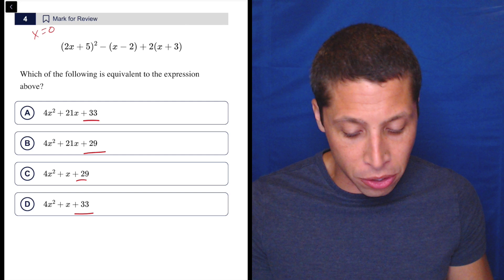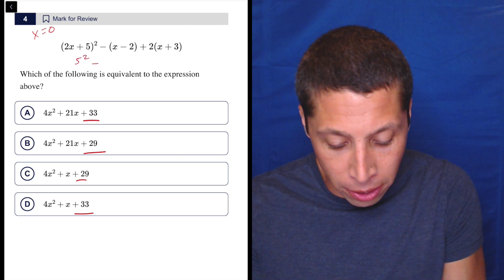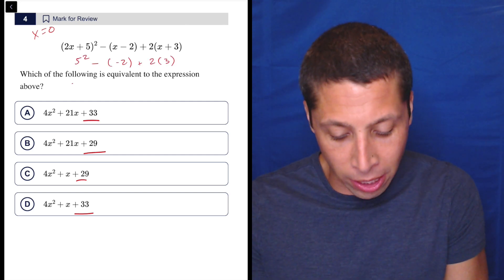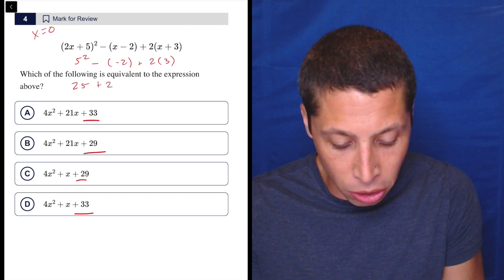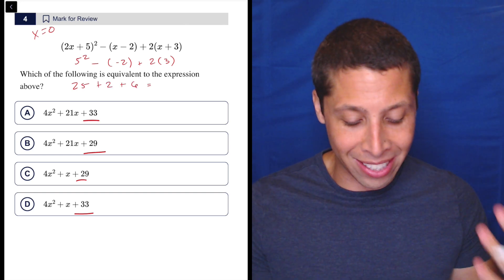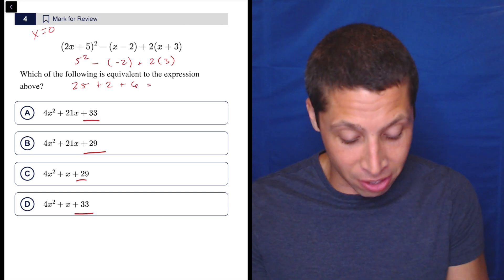So I'm going to make x equals zero like I always do. This is going to be five squared minus negative two plus two times three, right? So 25 plus two plus six. So 25 and two is 27 plus six is 33.